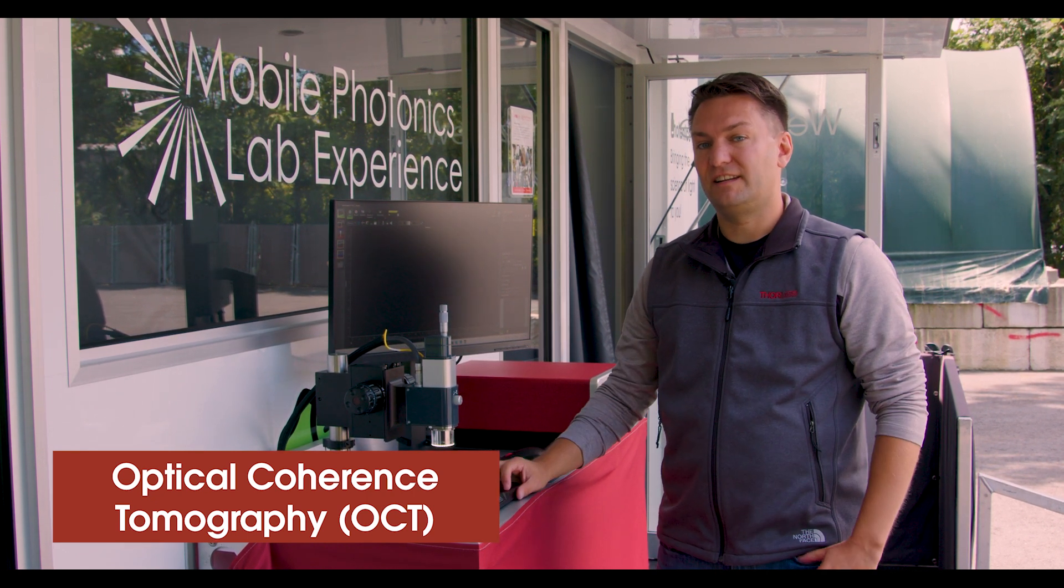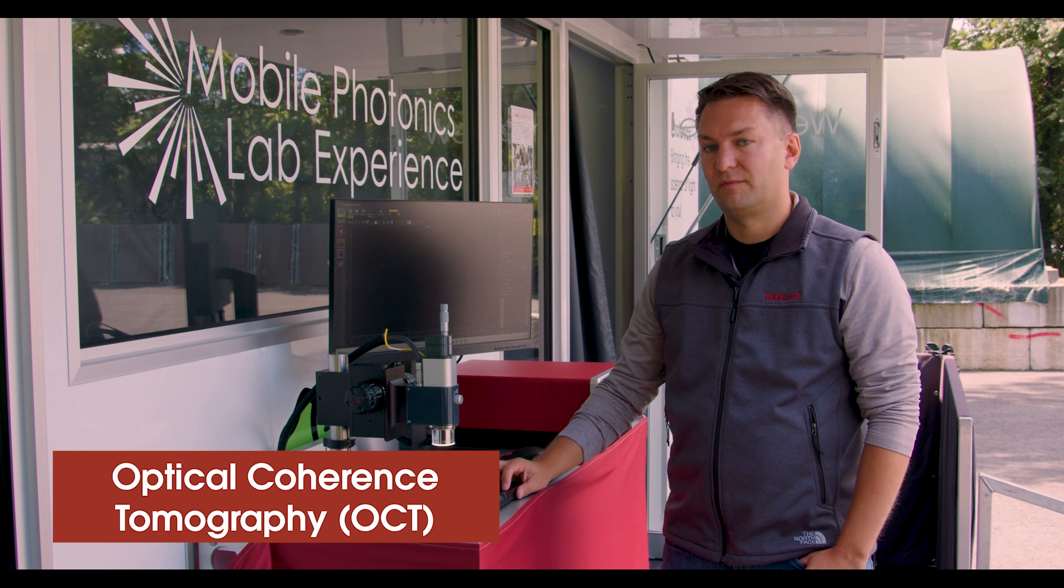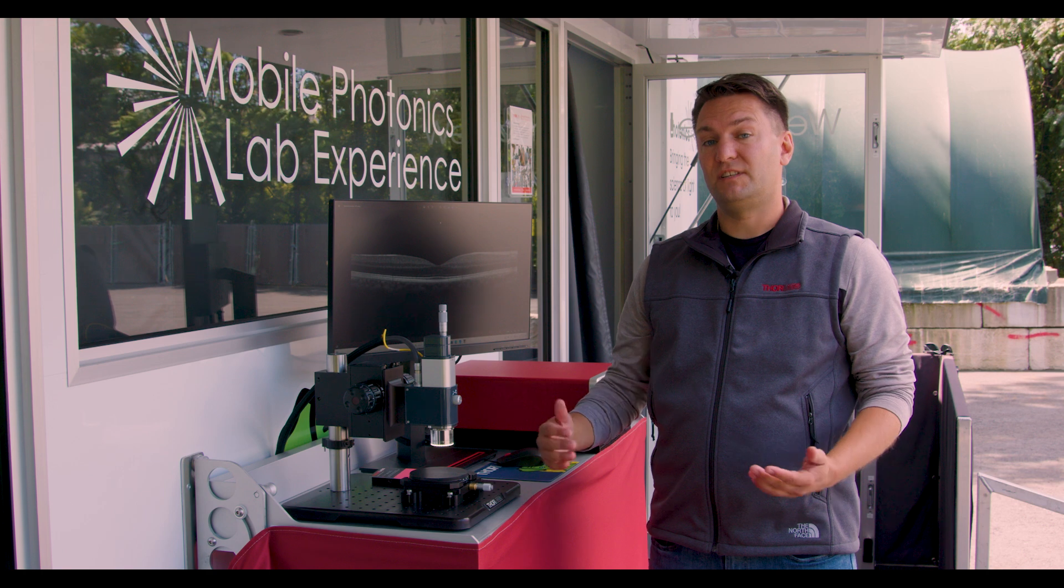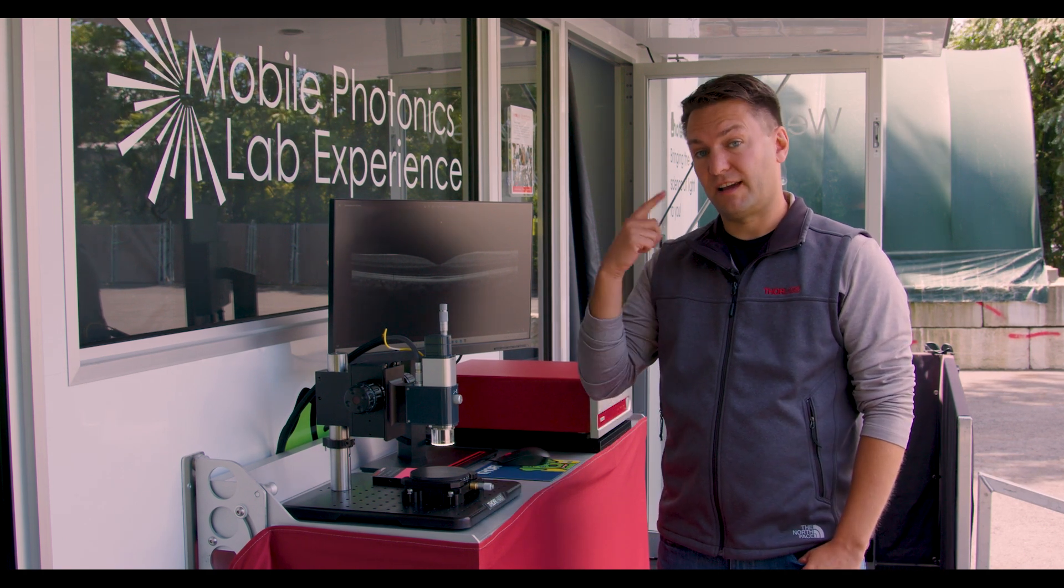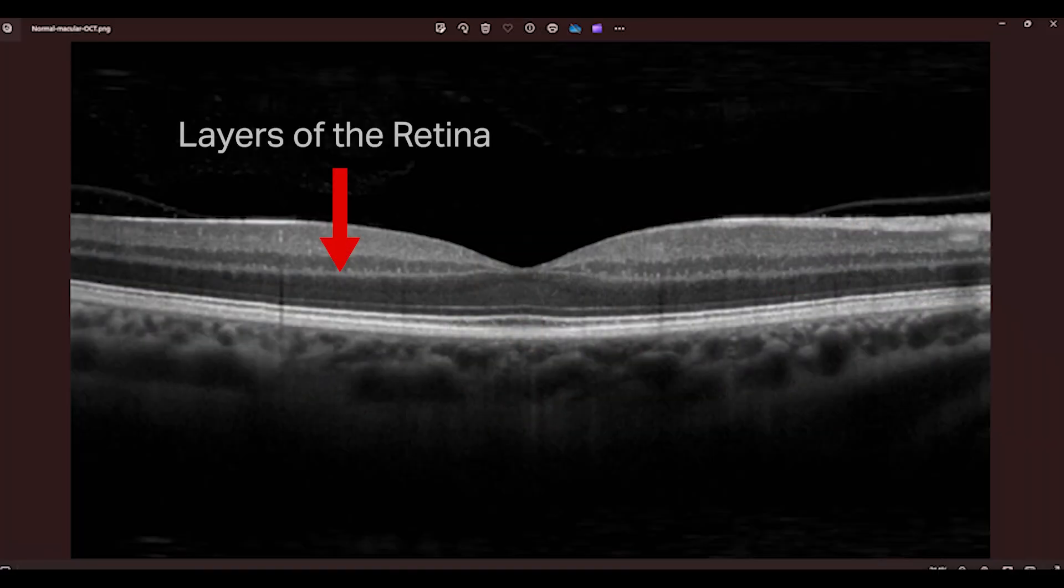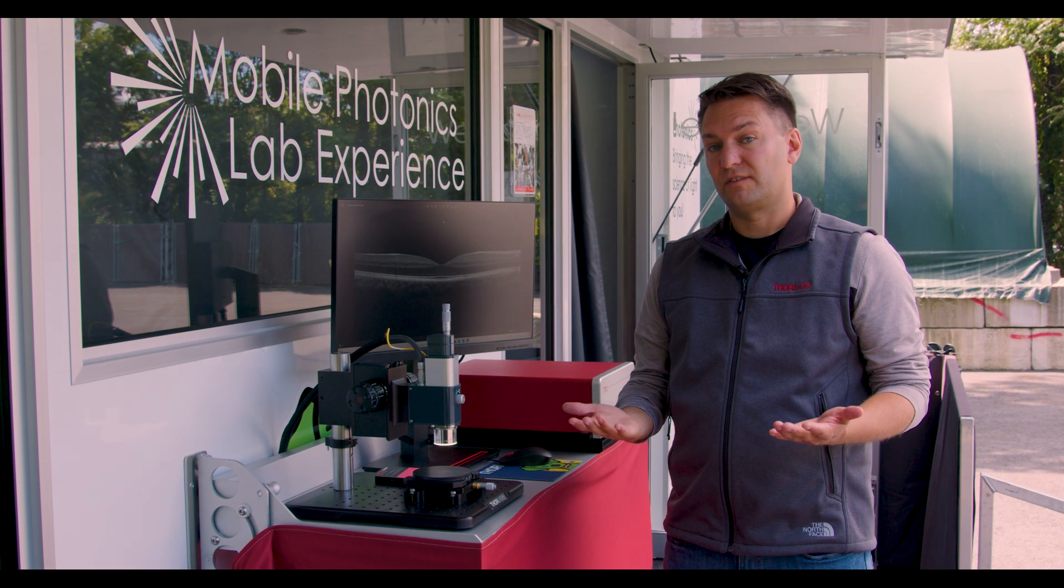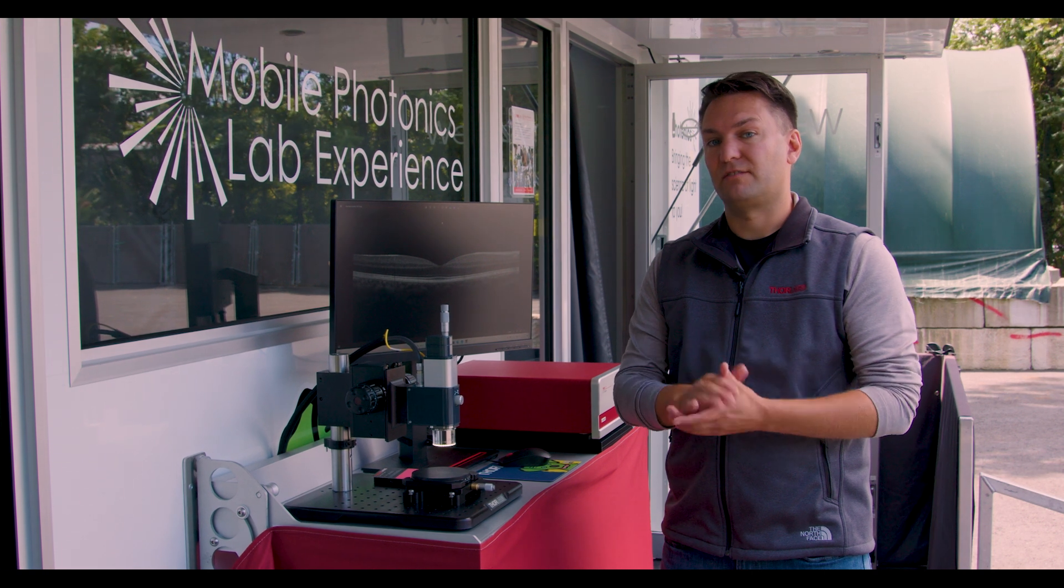And so this technique is called optical coherence tomography, or OCT. Where you see it in the day-to-day life is in ophthalmology. So when you go for your eye exam, it's very likely that they will take an OCT image of the retina in the back of your eye. So this is the layers of the retina, this is the fovea, and this is the back of the eye. You're looking for growths anywhere the retina might be detaching from the back of the eye.